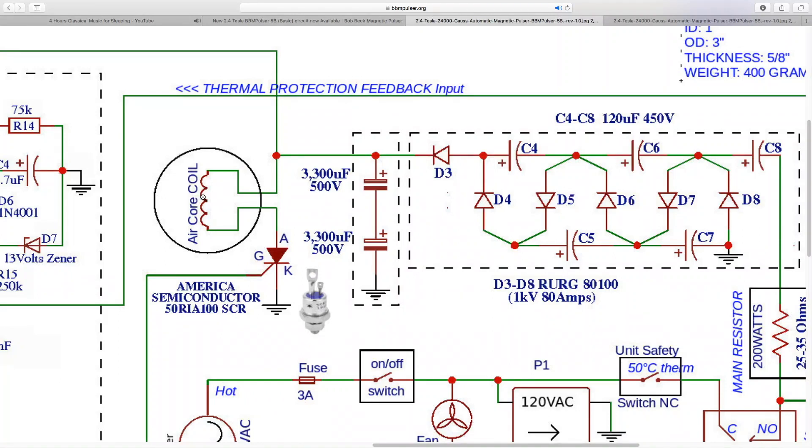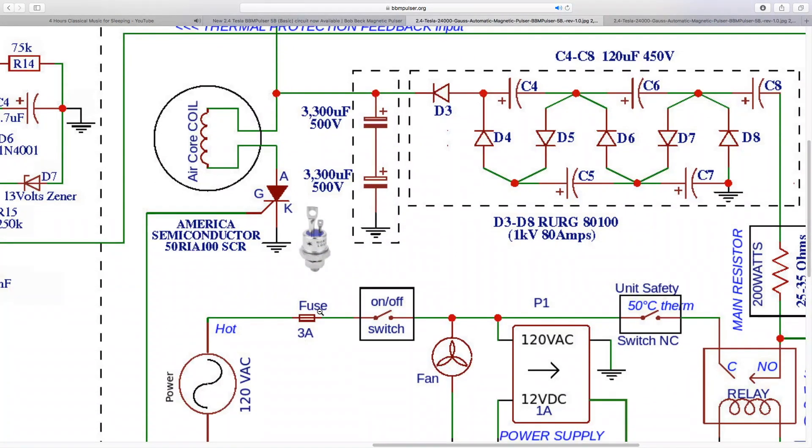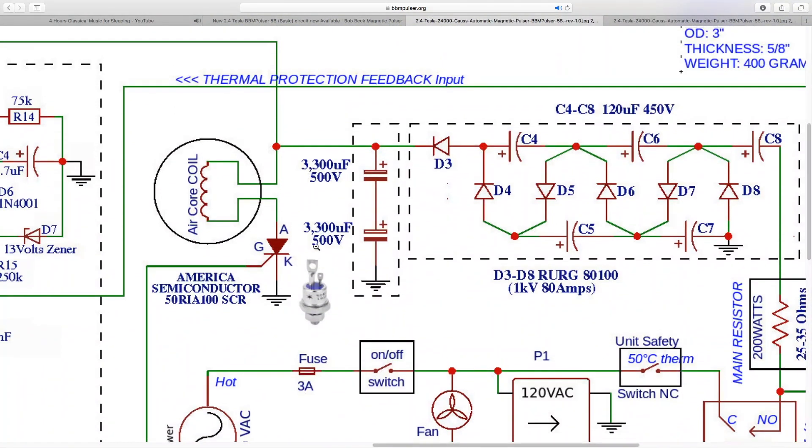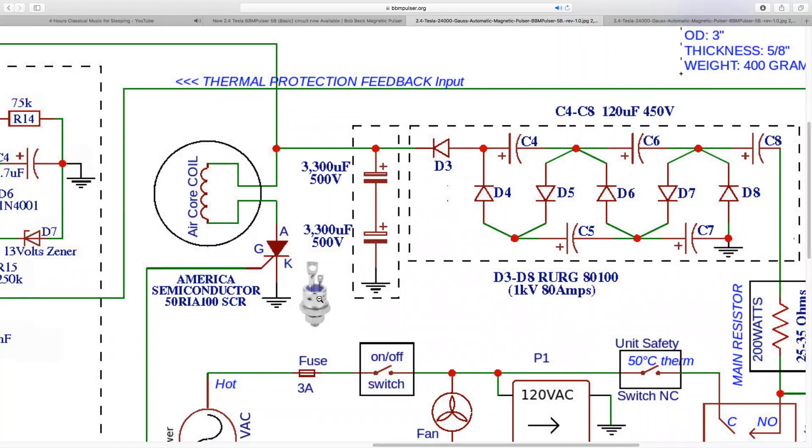You will use this energy stored in these capacitors to discharge it into the air core coil through the thyristor here. This is the new thyristor that's been used and I'm using America Semiconductor 50RIA100 thyristor. From my experience it's working good. I have tested it and it's not blowing and it's holding on to all the power stored in the capacitors and all the power that needs to be released into the coil. It's good and this is not expensive component, you can get it for about 15 dollars a piece.